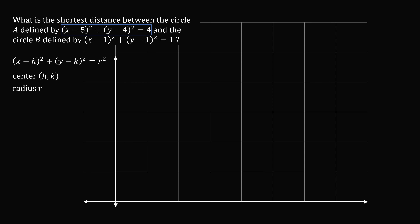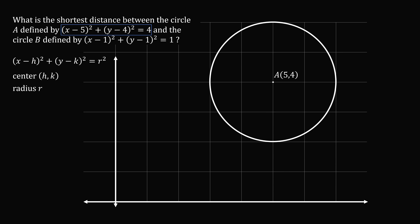From the first equation, circle A has a center of (5, 4) and its radius equals the square root of 4, which is 2. Circle B has a center of (1, 1) and its radius equals the square root of 1, which is 1. We can sketch both circles accordingly.